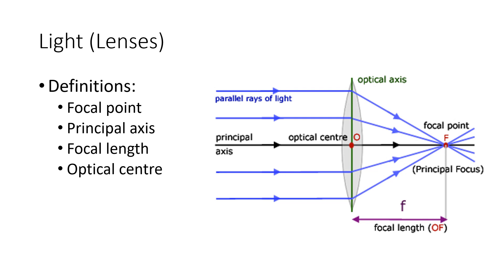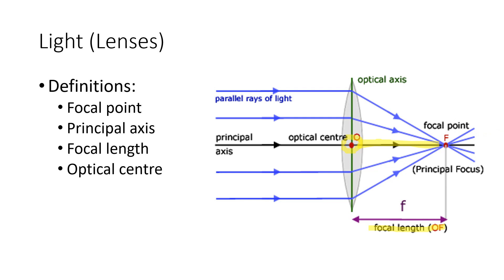You need to know where these terms are in the diagram. Usually the questions will just ask for focal length, so you need to know where the focal length is — between the focal point and the optical center. That is called one focal length, and double that will be twice the focal length. You can pause the video if you are writing the definitions.